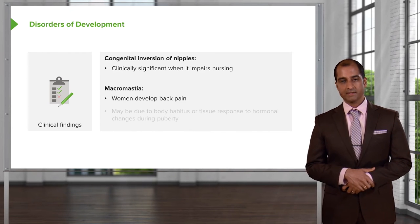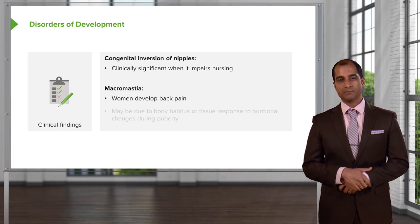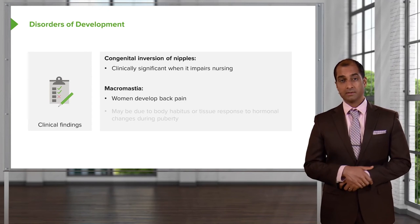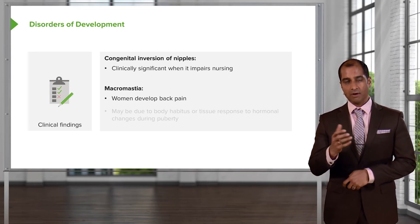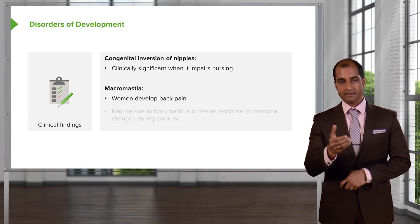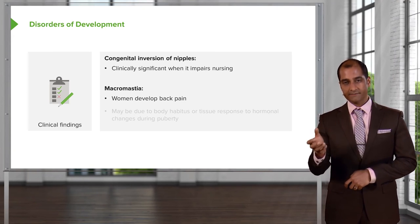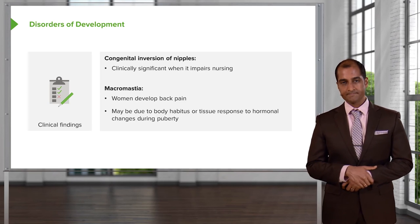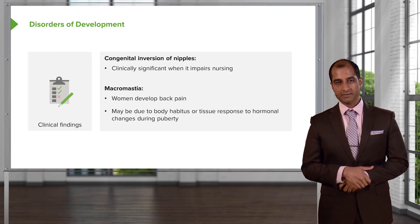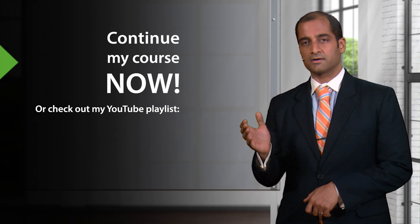We have a condition called macromastia, where women develop back pain because the breasts are so large that it causes straining of the back. Your recommendation and first line of management here would be to recommend bras with improved or increased support so that prevention of back pain can take place. You're practicing preventive medicine, paying close attention to the patient's symptoms and examining them. The pathogenesis of macromastia may be due to body habitus or tissue response to hormonal changes during puberty. The consequence might be back pain, and supportive bras are a practical recommendation.